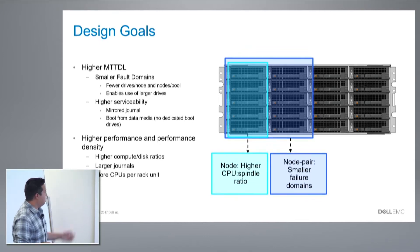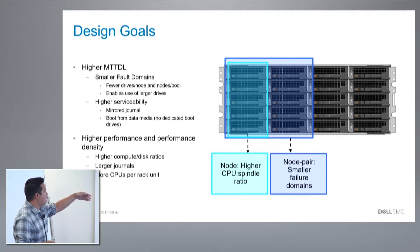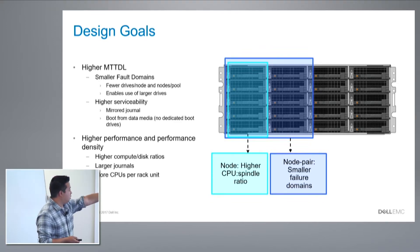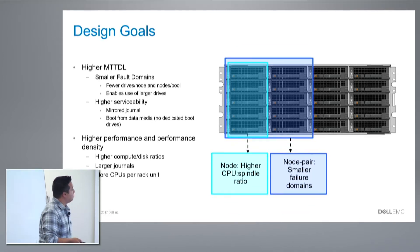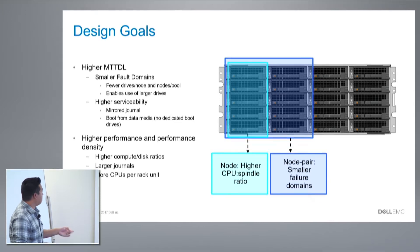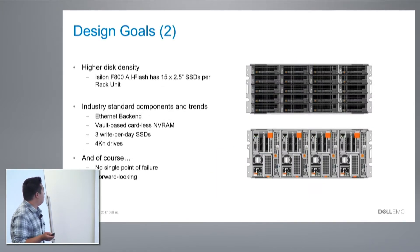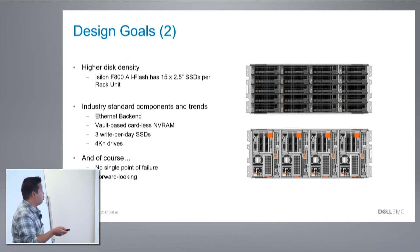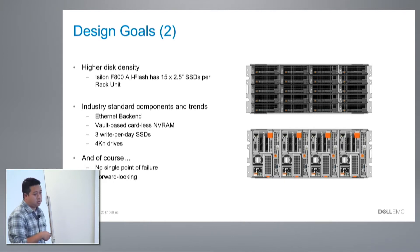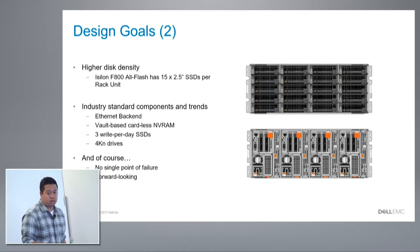As you can see, we're trying to limit the number of drives per compute node. In that chassis, each of those slots are four. Higher disk density: fifteen drives per compute times four equals sixty drives per chassis. For the F800 specifically, that's 1.6, 3.2, and 15.4 terabyte SSDs.